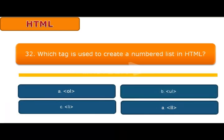Question number 32: Which tag is used to create a numbered list in HTML? A OL, B UL, C LI, or D double L. Answer is OL. This is OL, it means this is the ordered list. Ordered list is to create a numbered list in HTML.